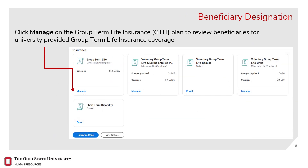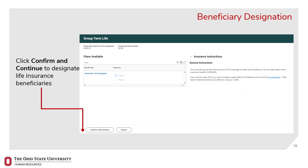Click Manage on the Group Term Life Insurance card to review beneficiaries for university-provided group term life insurance coverage. Please note, the beneficiaries added on the group term life insurance plan apply to both group term life and voluntary group term life insurance. You cannot select waive on this screen. If you wish to waive group term life insurance coverage, you must complete and submit a group term life insurance waiver available at hr.osu.edu/policies-forms.